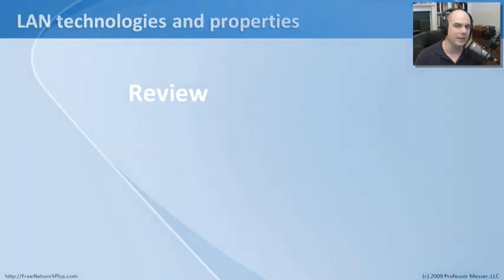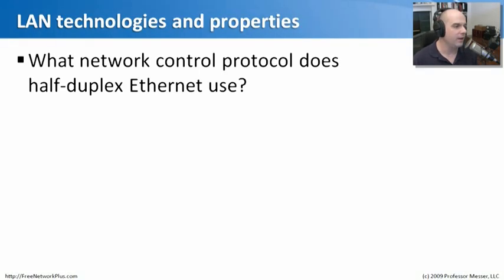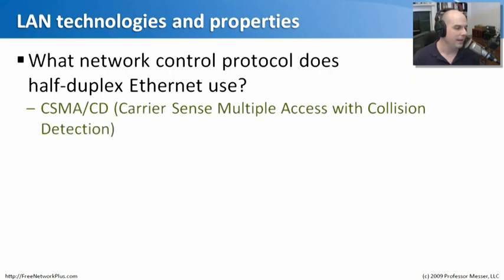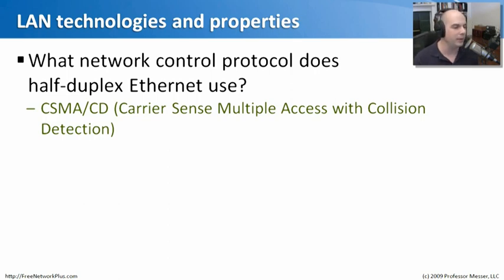Let's review what we've learned about LAN technologies. First: what network control protocol does half-duplex Ethernet use? That's Carrier Sense Multiple Access with Collision Detection — CSMA-CD. With full-duplex there is no collision, as people can send and receive at the same time. So CSMA-CD technology is only in use during half-duplex Ethernet communication.